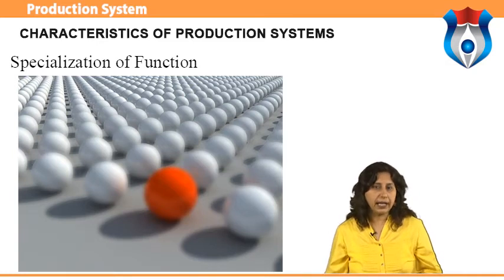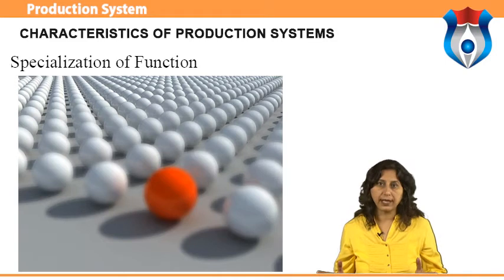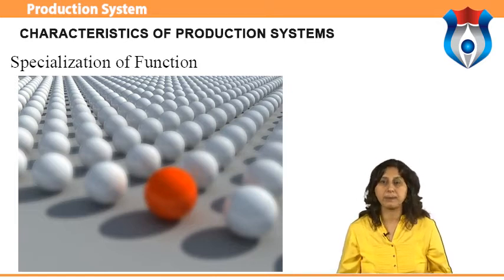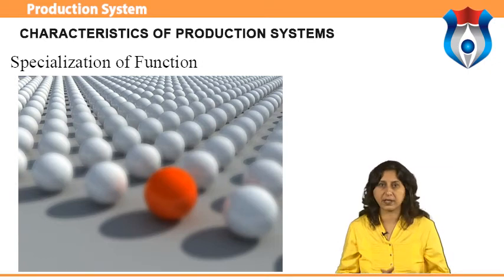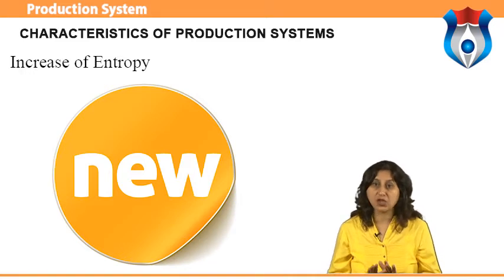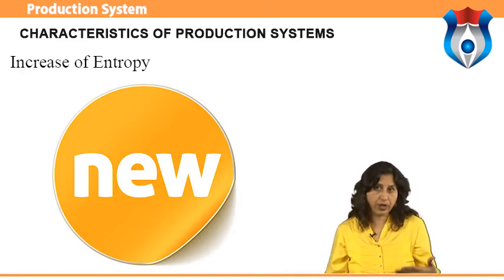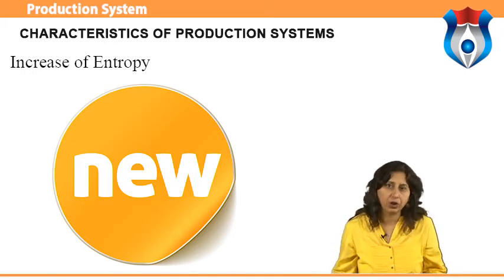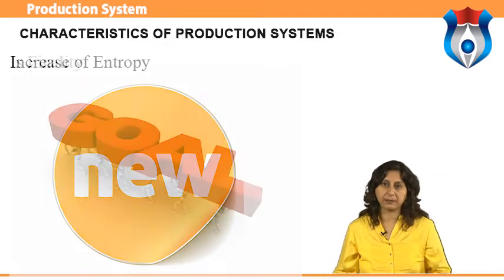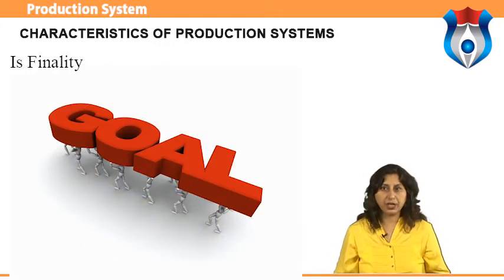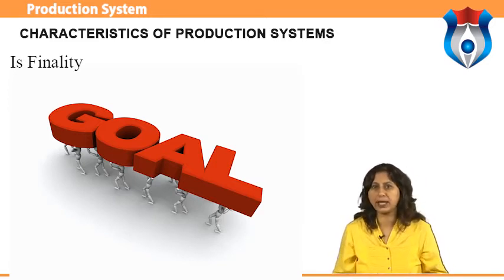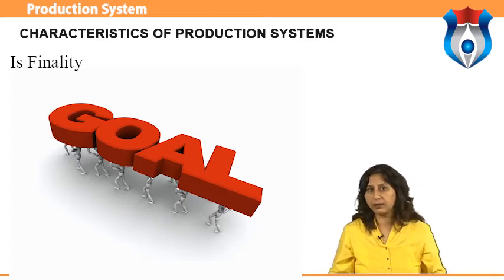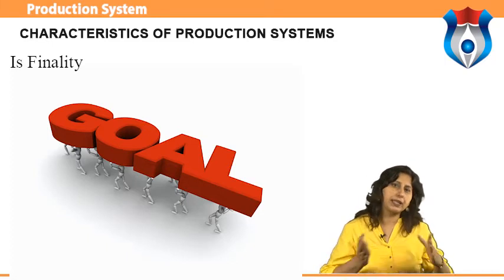Specialization of function: if the production system expands its area of production and a large number of hierarchy levels each perform specialized functions, then the integration of specialization will give maximum output or benefit. Increase of entropy: everything is changing day by day; we replace employees, machines, and technology with new ones for stability of production. The main aim is to reach ultimate goals, and there are various approaches to converting inputs to outputs.